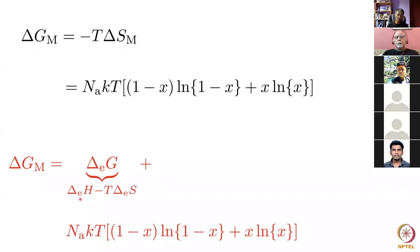This excess free energy consists of an enthalpy term and entropy terms which are not from the configurational entropy — for example, thermal entropy. This necessarily tells us that atoms may not be randomly mixed at low temperatures, but nevertheless we assume a random mixture of atoms.